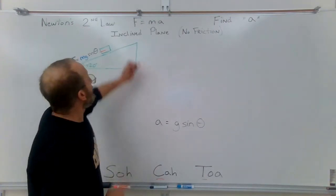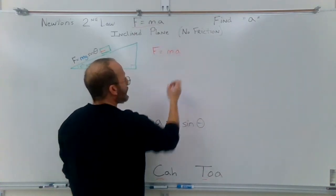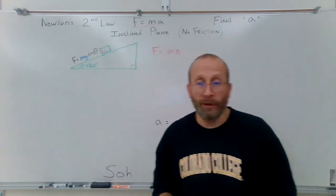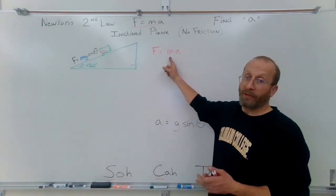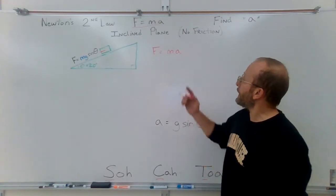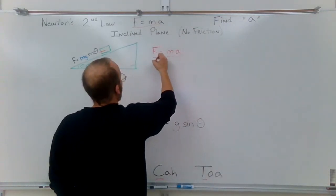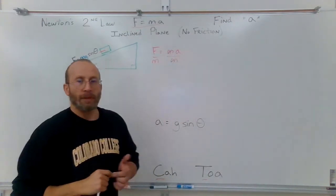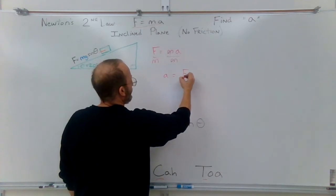We're going to start with F equals ma — force equals mass times acceleration. If I get hit by a force, whether it's a punch, a semi-truck, a water balloon, or a paintball, the two variables that determine how much it impacts me are the mass of the object and its acceleration. We want to solve for A, so I'm going to rearrange: divide both sides by M, those cancel, and we get A equals F divided by M.